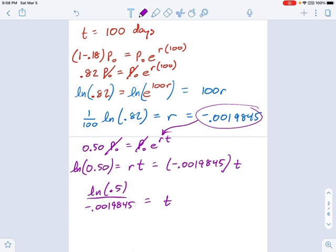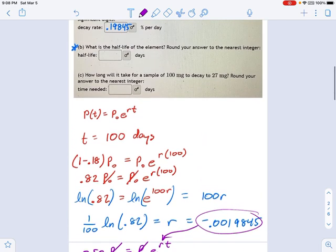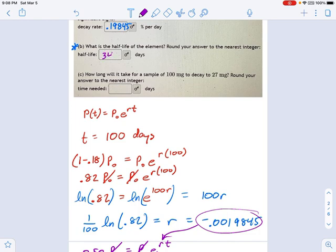In other words, how long it takes to reach 50%. Now, as a sanity check, this better be longer than 100 days, because it took me 100 days to get to 82%. It's going to take longer to get to 50%. So that's a useful way to just check yourself and make sure that we're talking common sense here. And my calculator told me 349 days. Great.